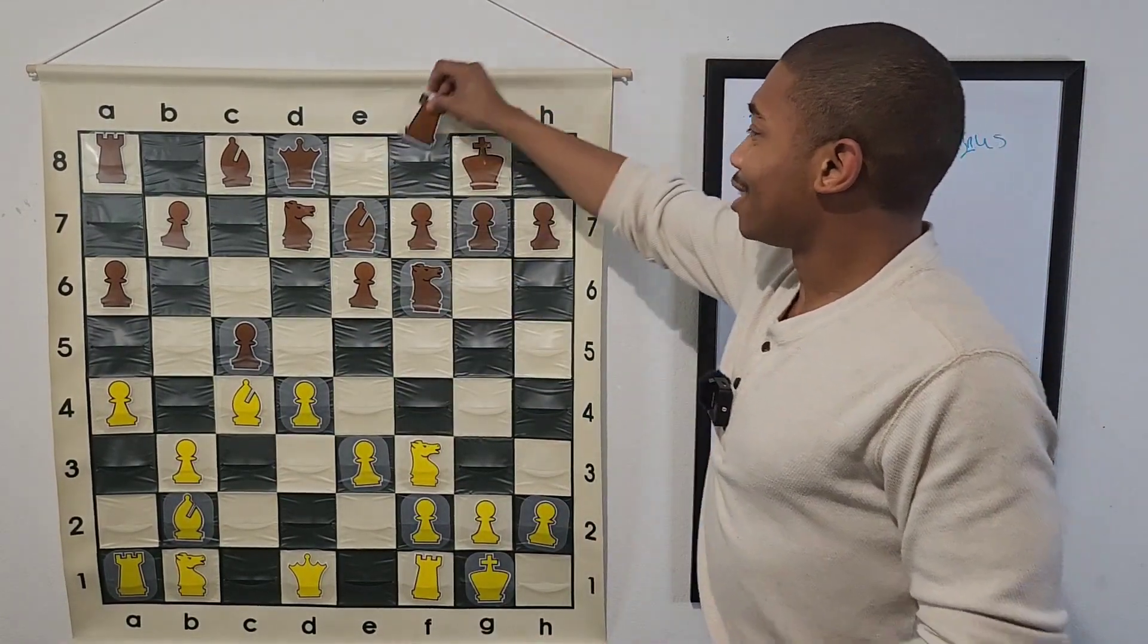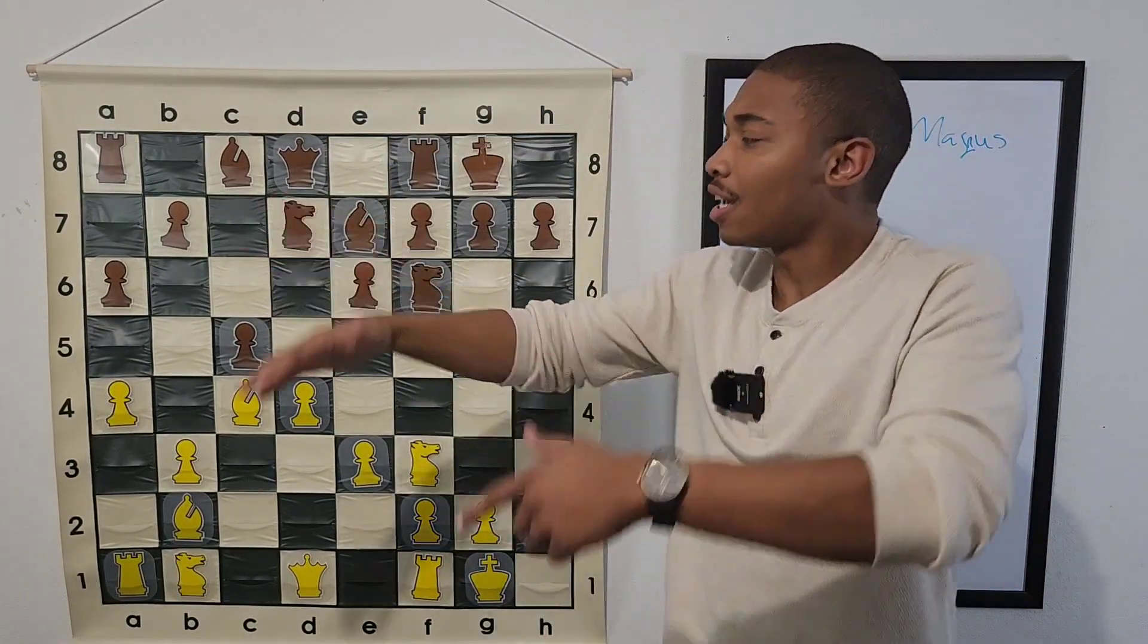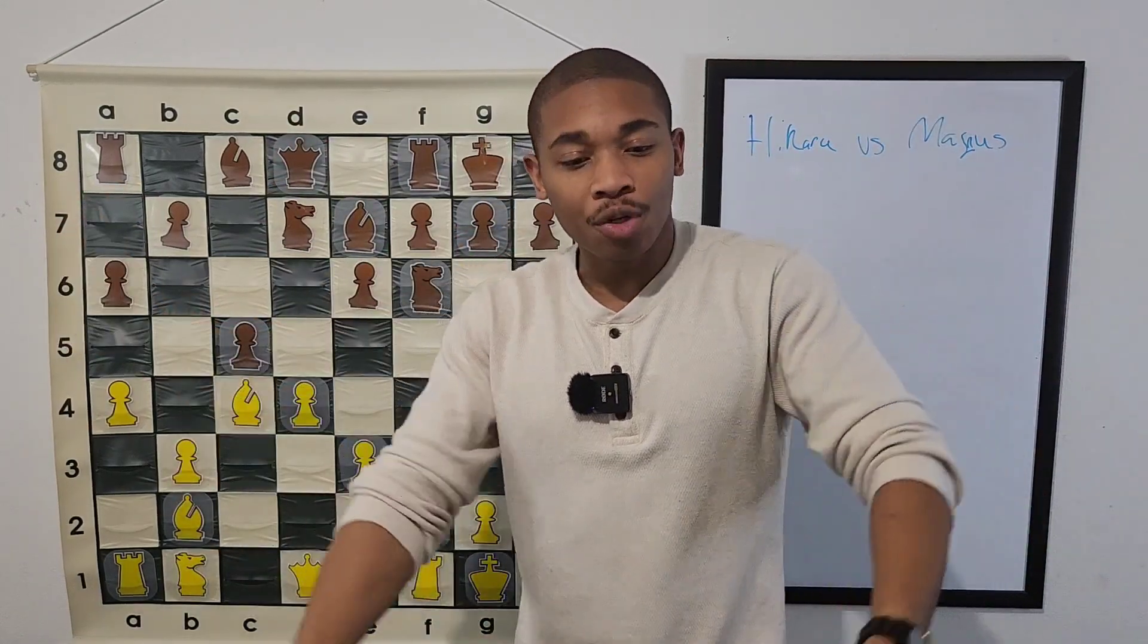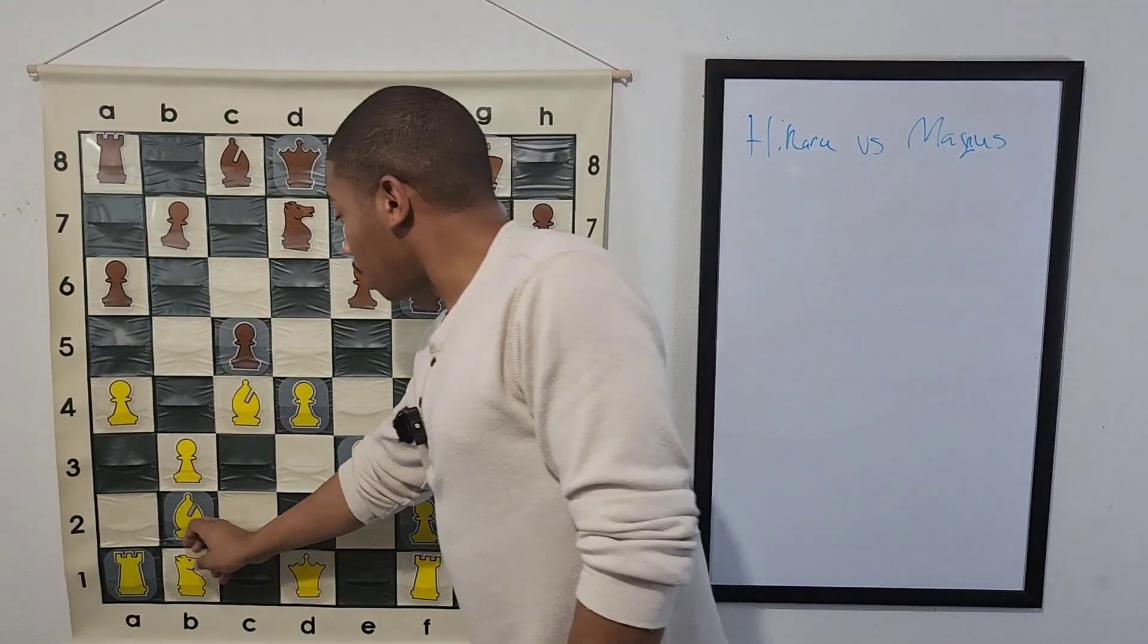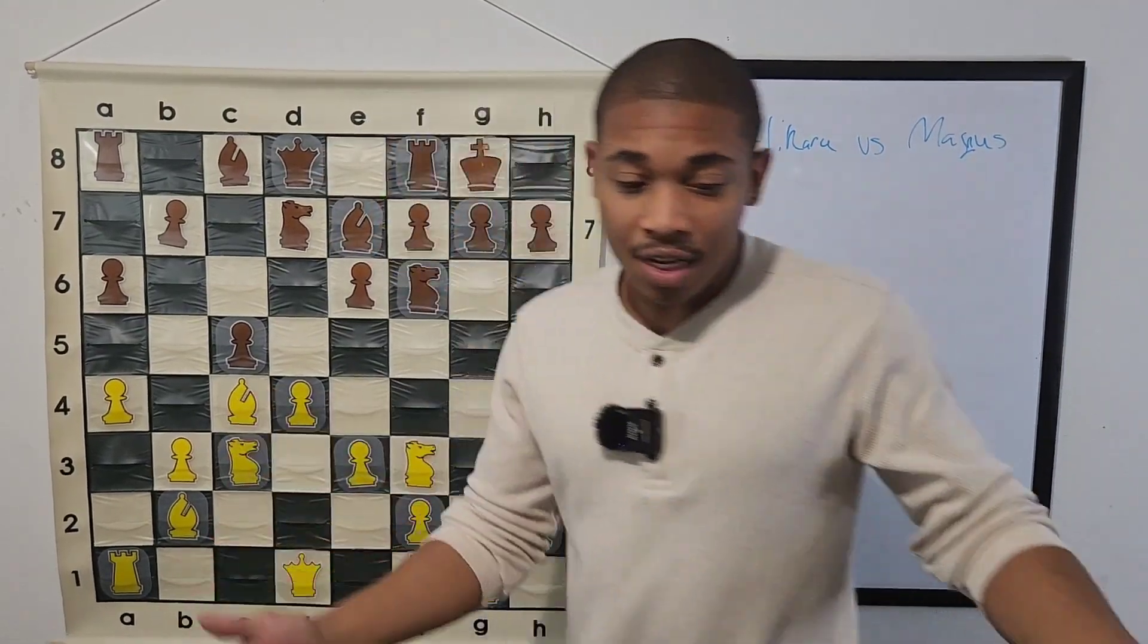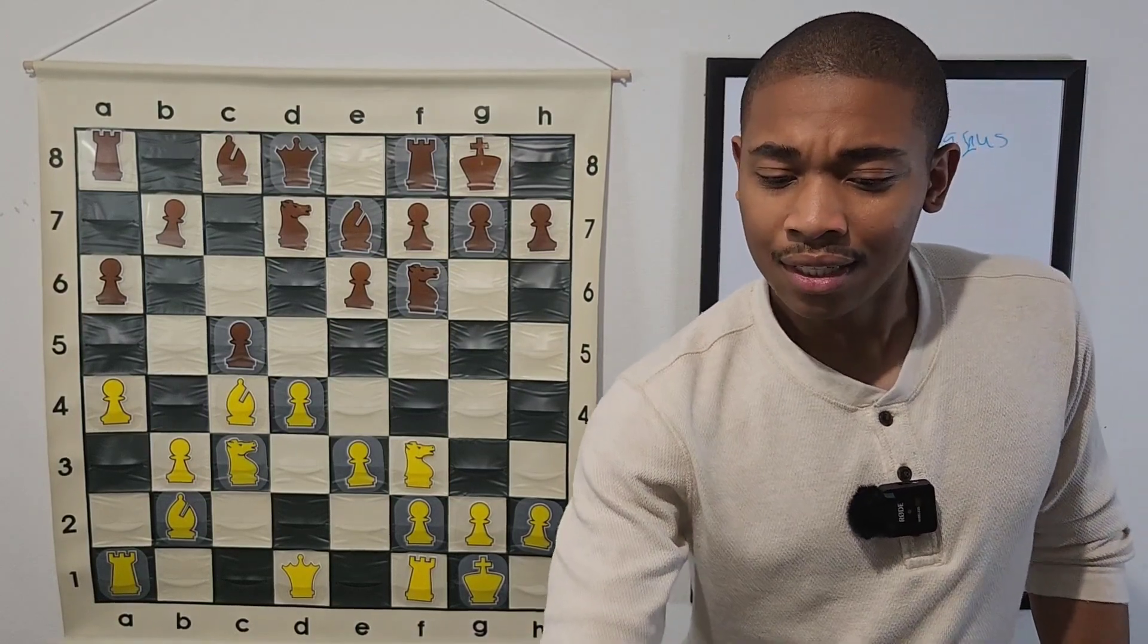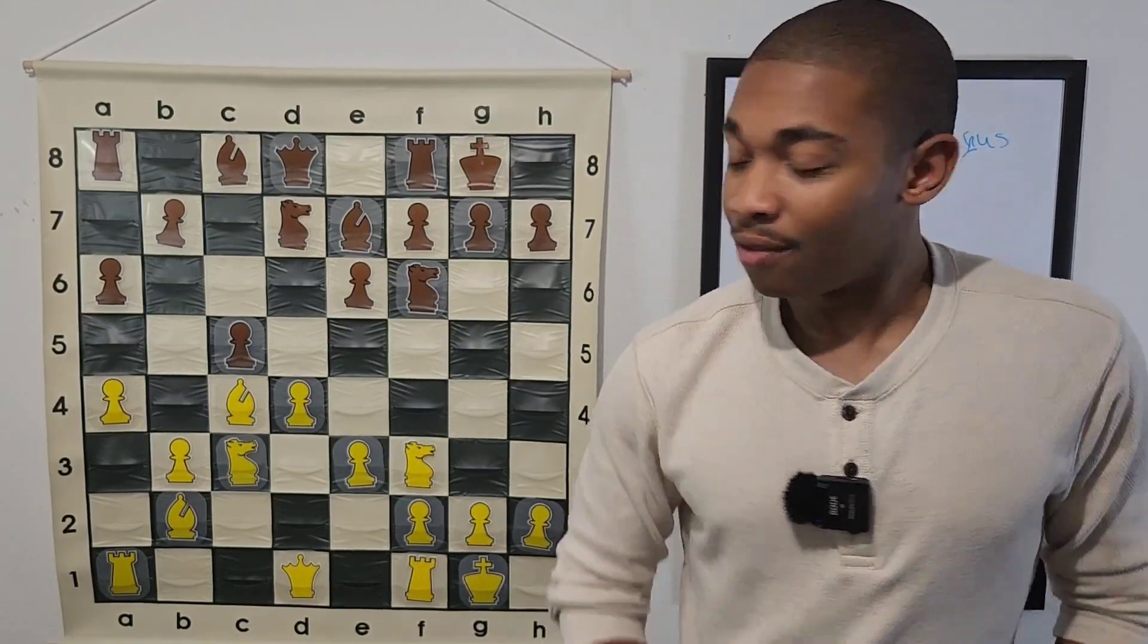Then Magnus Carlsen was like, so? I'm just going to Castle anyway. Like, I don't even care about doing the move B5. I'm a world champion. What do I have to prove in this tournament? And so, Hikaru Nakamura's like, okay, you know, I'm just a streamer. What do you mean? You're world champion. I'm just a streamer. And so, Hikaru Nakamura's being cool. He played the move Knight C3.